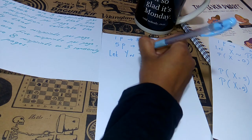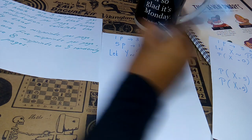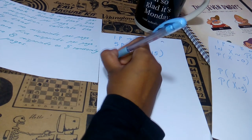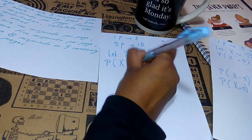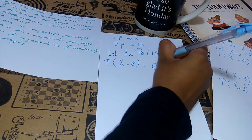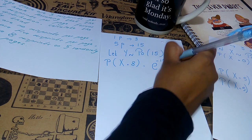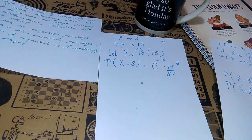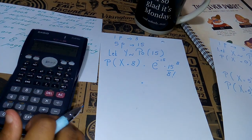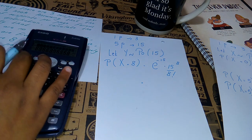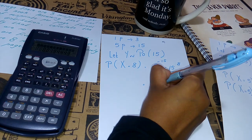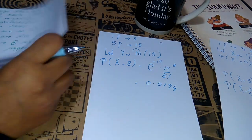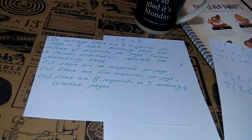So we define another distribution: let Y follow Poisson(15). We need to find P(Y = 8), which equals the exponential to the power of negative 15 multiplied by 15 to the power 8 over 8 factorial. Using the calculator — 15 to the power 8 divided by 8 factorial multiplied by the exponential of negative 15 — we get 0.0194. These were the answers for this question. Thank you for watching, see you soon!